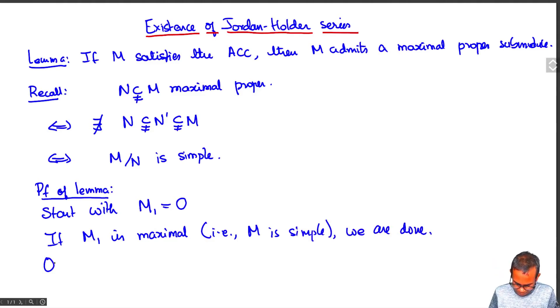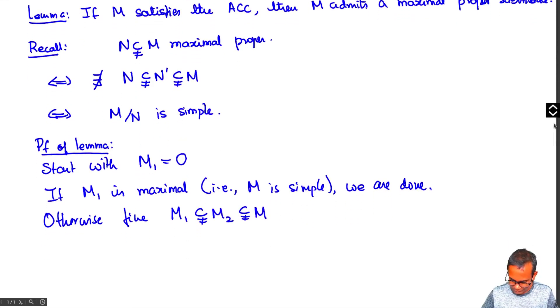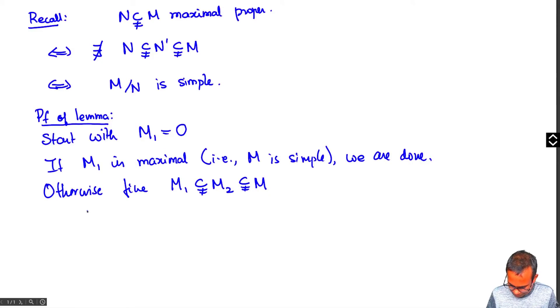Otherwise, find M1 strictly contained in M2 which is strictly contained in M. And now either M2 is maximal, we are done.